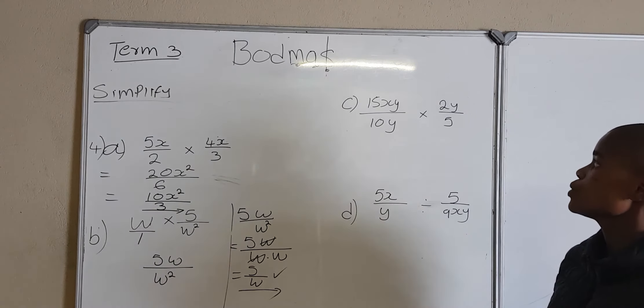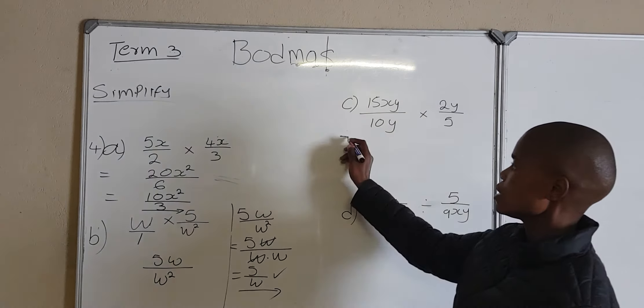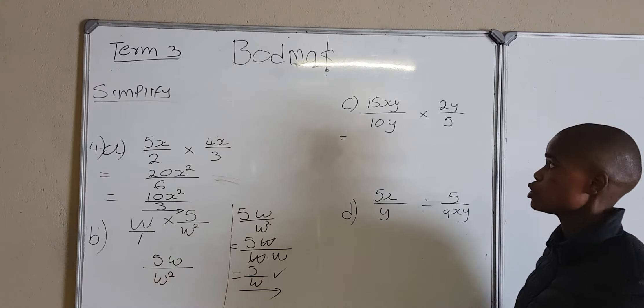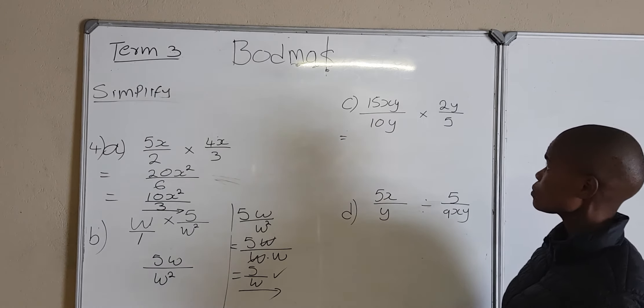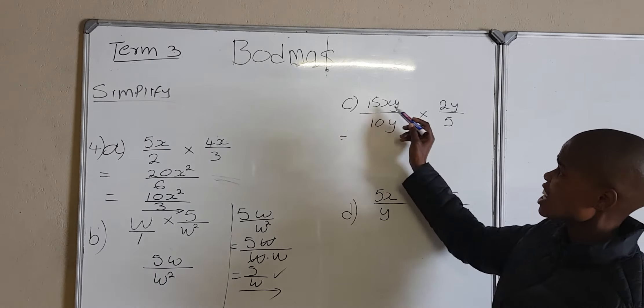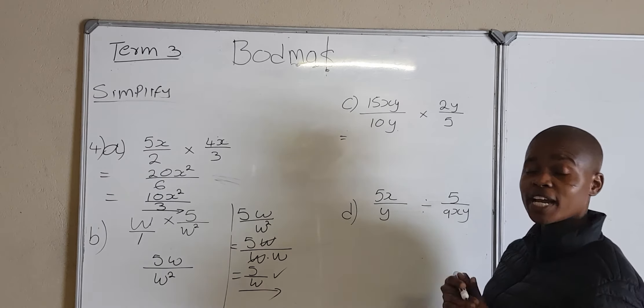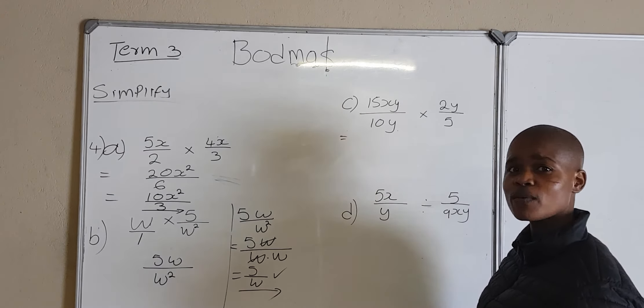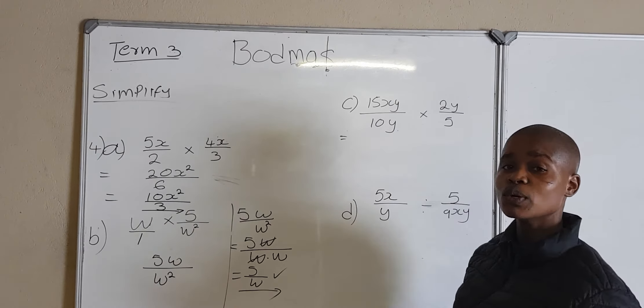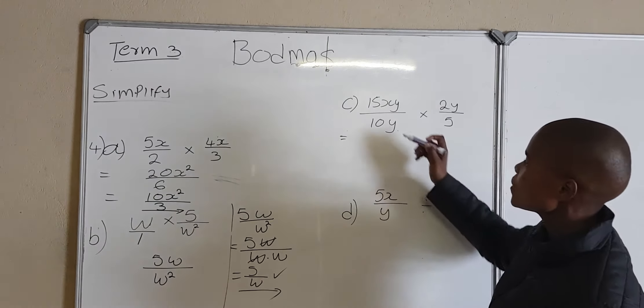Now we are going to the next one. Remember, I said that before you can do your multiplication, always simplify your fraction if it is possible. So let's look at this one: I've got 15xy divided by 10y. I've got y there and y here, so I can simplify it. I've also got 10 and 50. I look for the highest common factor of 15 and 10.